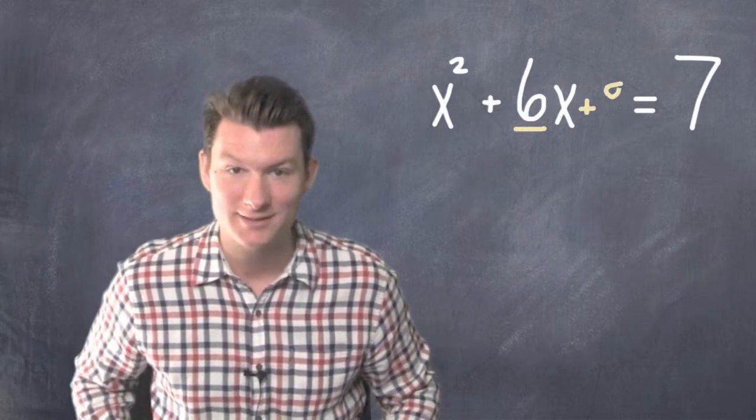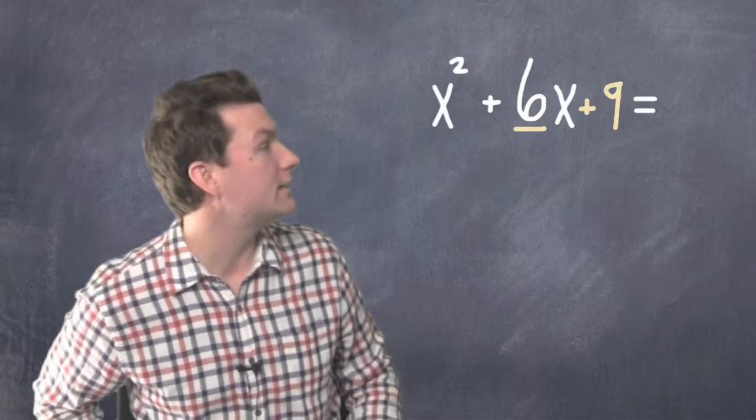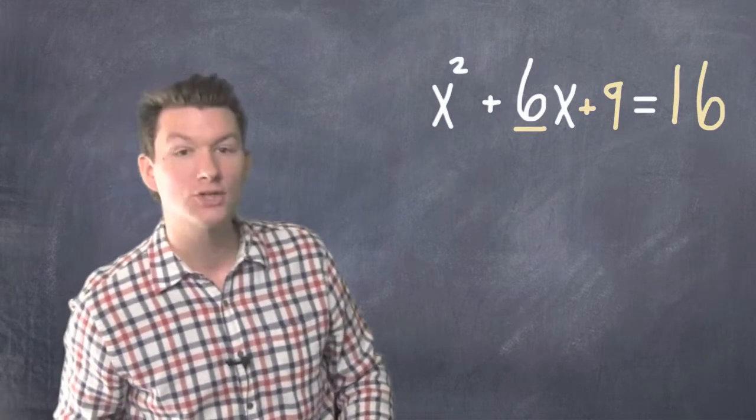So what do you get? You get x squared plus 6x plus 9 equals 7 plus 9 is 16. Alright, cool. First equation's done.